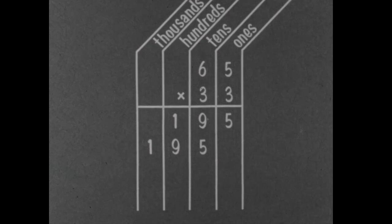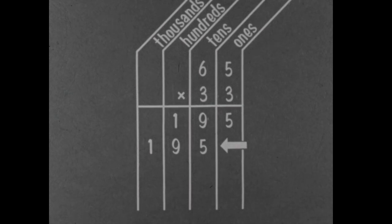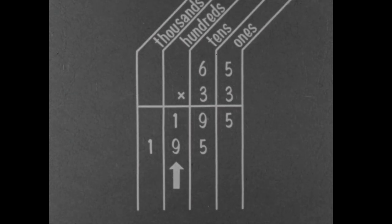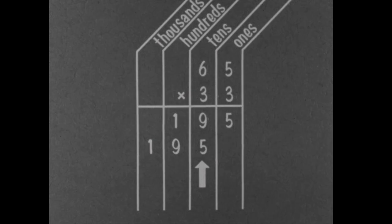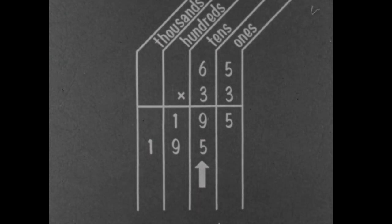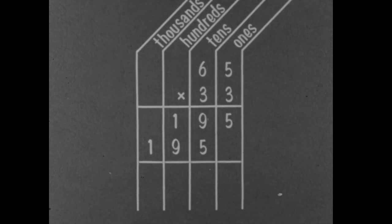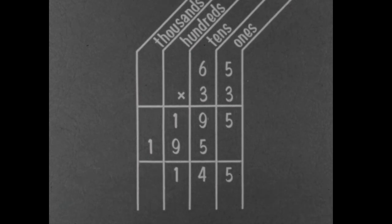So we have 2 partial products: 1 thousand and 950. You can leave off the 0 because the second partial product is indented — this puts the 5 in the 10's place. Now to find the total product, you add the partial products. The product is 2,145.